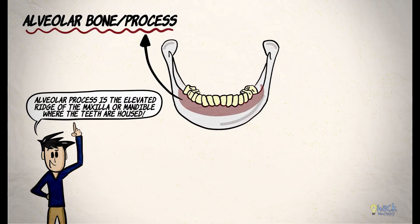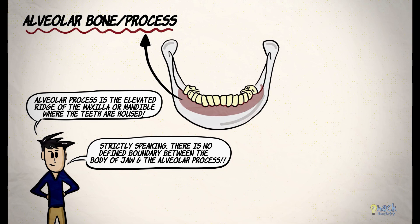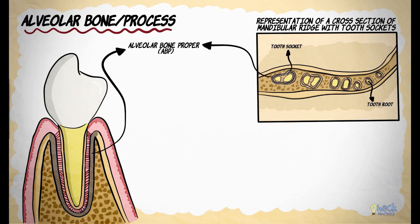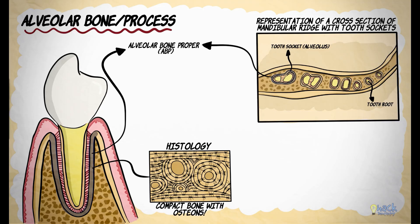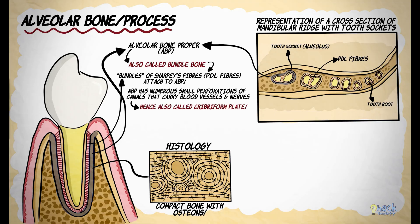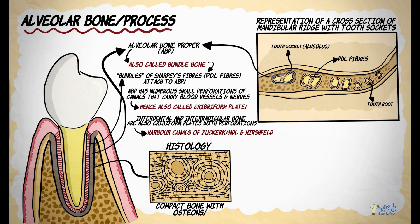The alveolar bone, also called the alveolar process, is the elevated ridge of the maxilla and mandible where the teeth are housed. There is no defined boundary between the body of the jaws and the alveolar process. The alveolar bone proper is the bone forming the tooth socket or alveolus surrounding the roots of the tooth. Histologically it is a compact bone having osteons, also called bundle bone since bundles of principal periodontal ligament fibers called Sharpey's fibers attach to the bone from the tooth. The alveolar bone proper has numerous small perforations carrying nerves and blood vessels, hence it is also called the cribriform plate. The interdental and interradicular septa are also cribriform plates and house canals called the canals of Zuckerkandl and Hirschfeld.